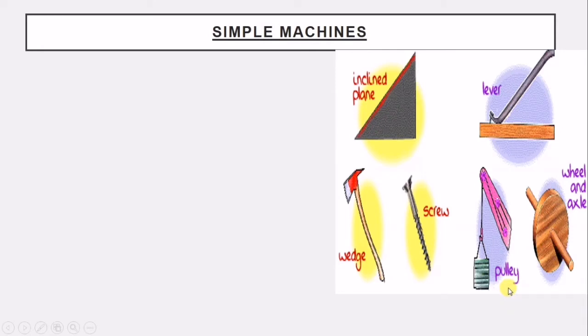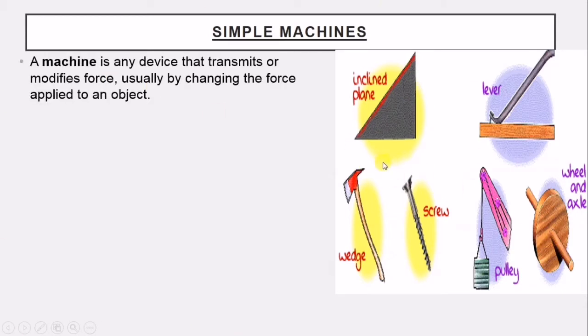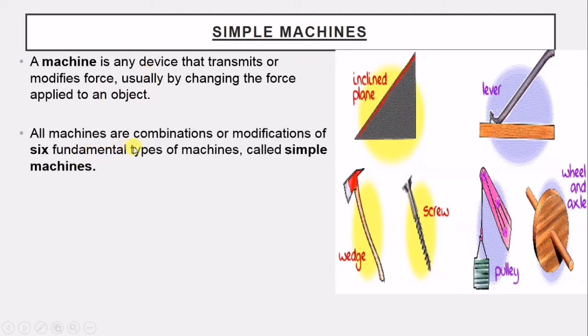The others you know — like bicycle, bulldozer, lawnmower — they are not simple machines; they are compound machines, combinations of these. A machine is any device that transmits or modifies force — usually by changing the force applied by you on the object. All machines are combinations or modifications of six fundamental types called simple machines.